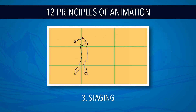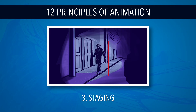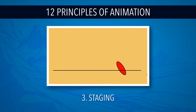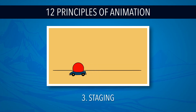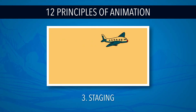Such as placement of the character in the frame, or the use of light and shadow, or the angle or position of the camera. The essence of this principle is keeping focus on what's relevant and avoiding unnecessary detail.